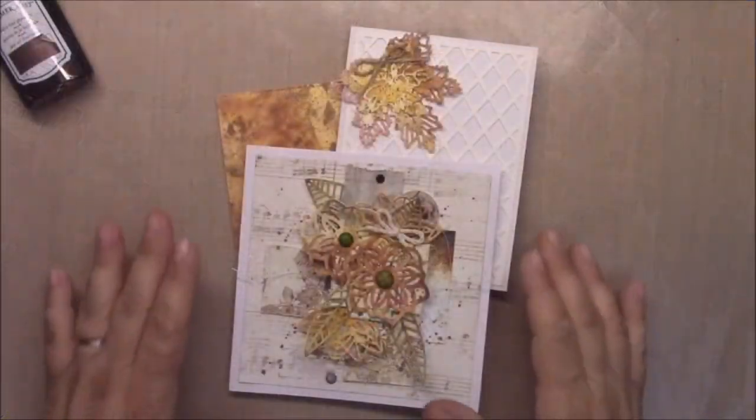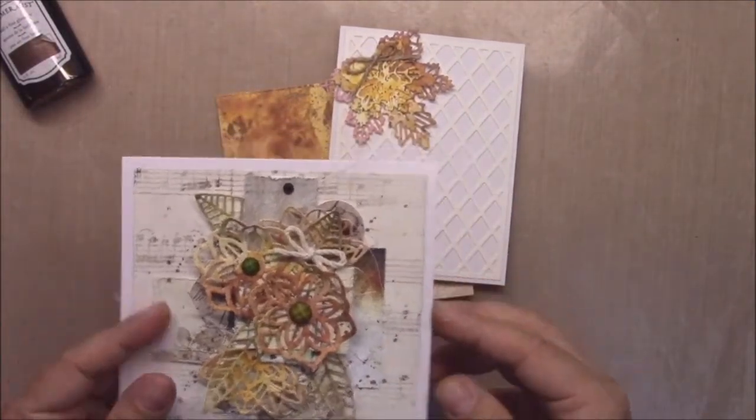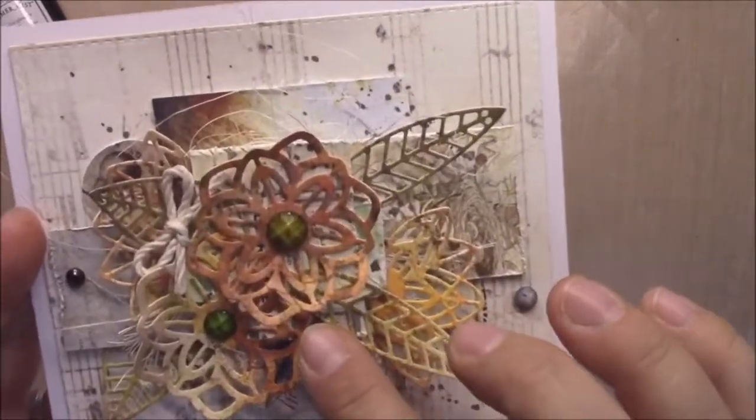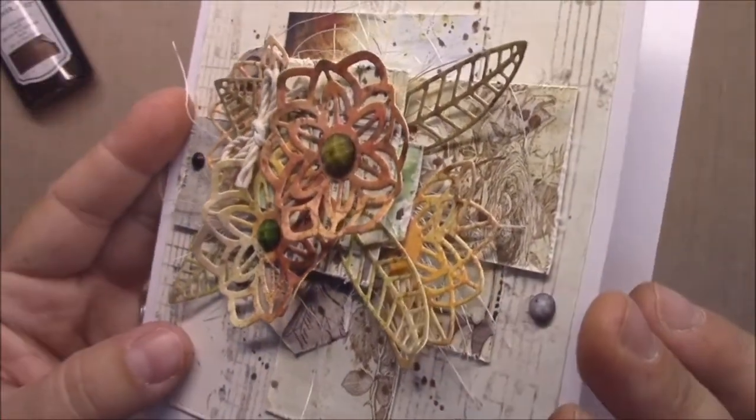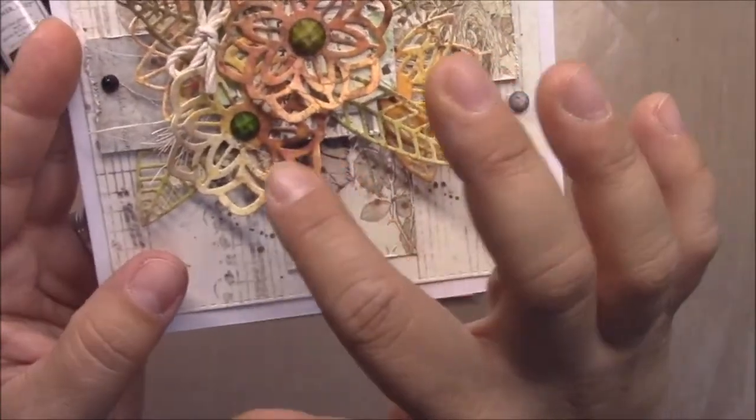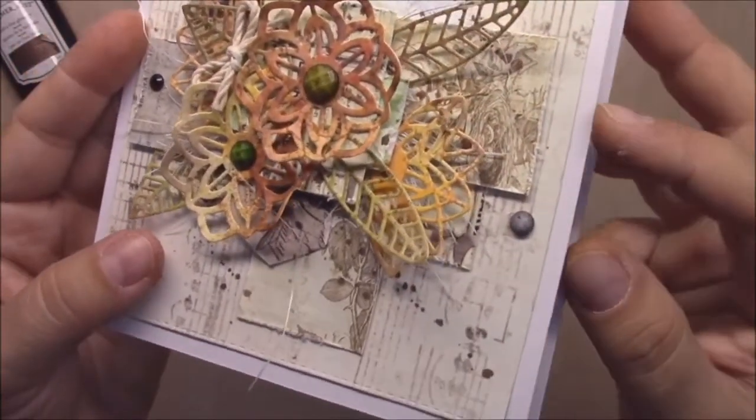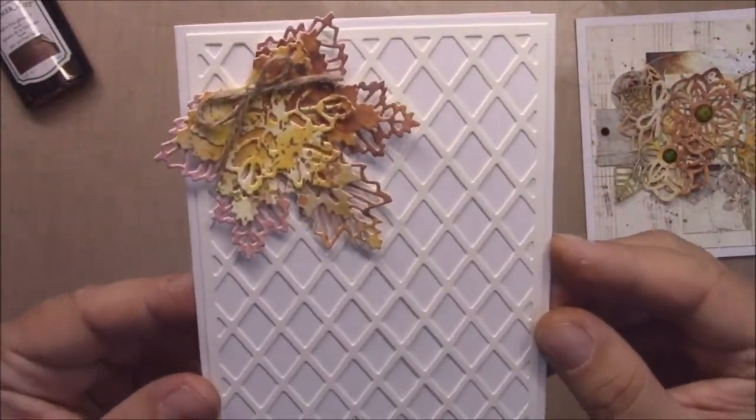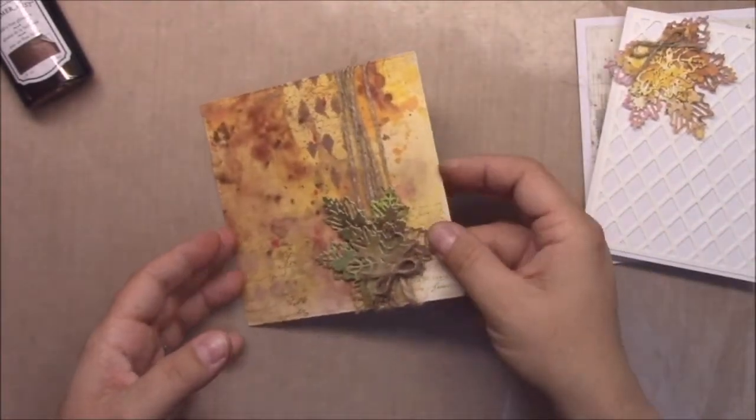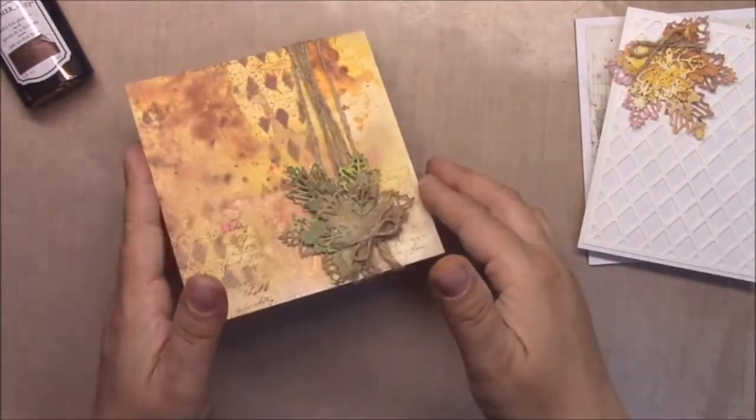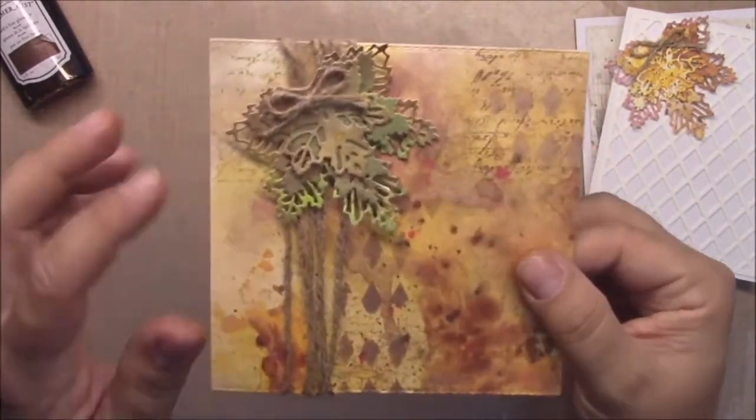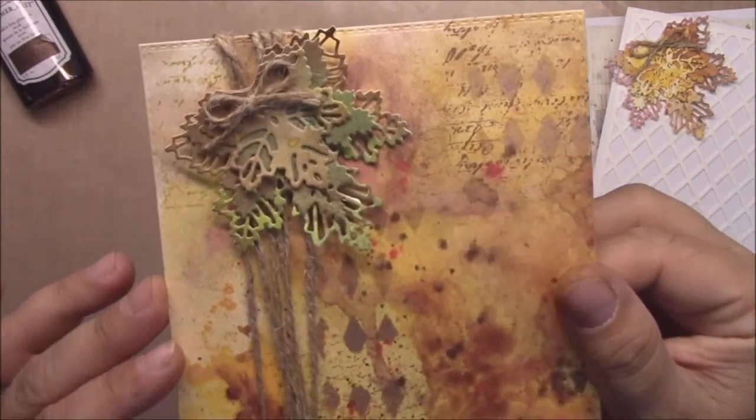So here are my finished cards. I used the Frantic Stamper dies to make these die cuts. Look how awesome it looks like, really nice autumn card. Here is second one, more simpler.